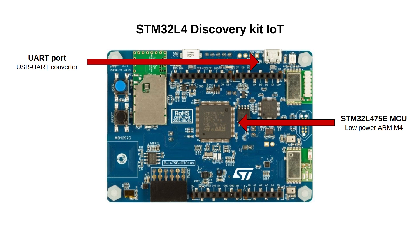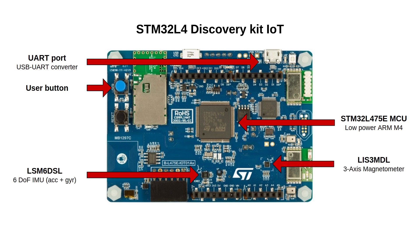Beyond that, the board also offers general-purpose input-output pins that enable users to interact with it. The specific button you can see here is the one that triggers the publication to the ROS2 world. The ST Discovery IoT board also exposes a lot of sensors, ranging from temperature or humidity sensors to a magnetometer. For this specific demo, we are interested in a 6 degrees of freedom inertial measurement unit composed of an accelerometer and a gyroscope, and a 3 degrees of freedom magnetometer. The combination of these two sensors measures the specific force, angular velocity, and relative orientation of the board when it is being moved with respect to a given reference frame.